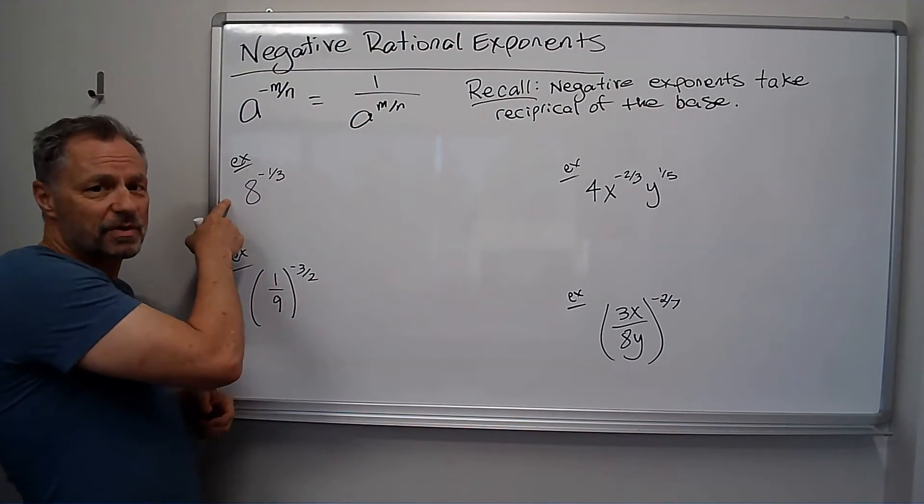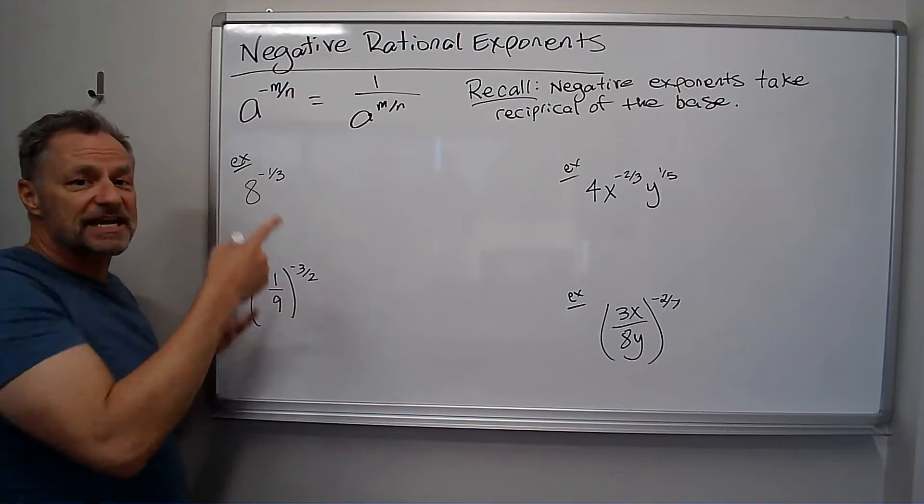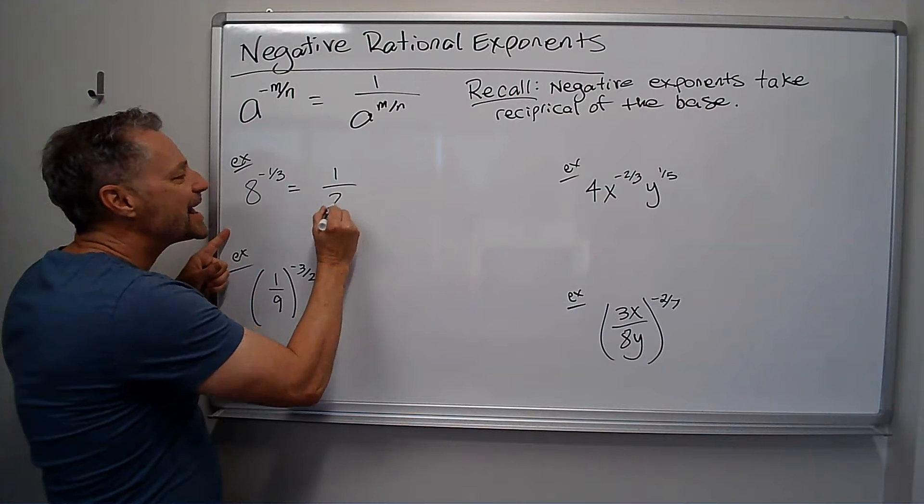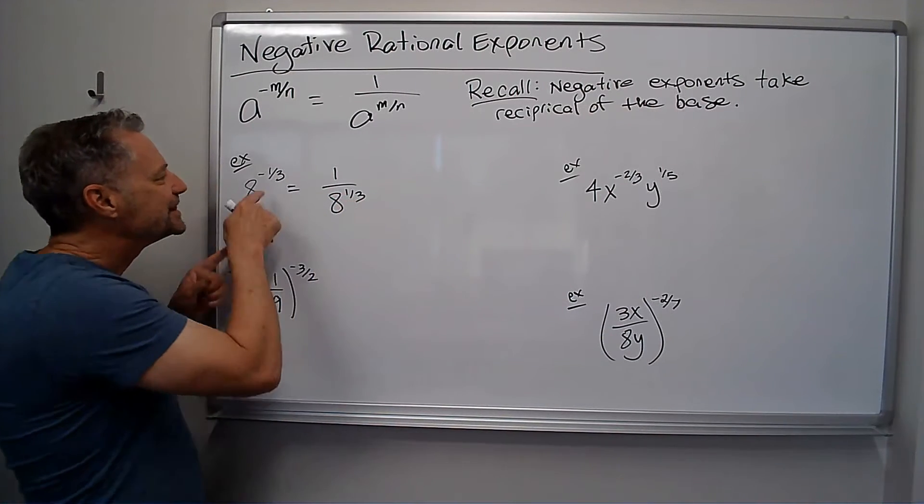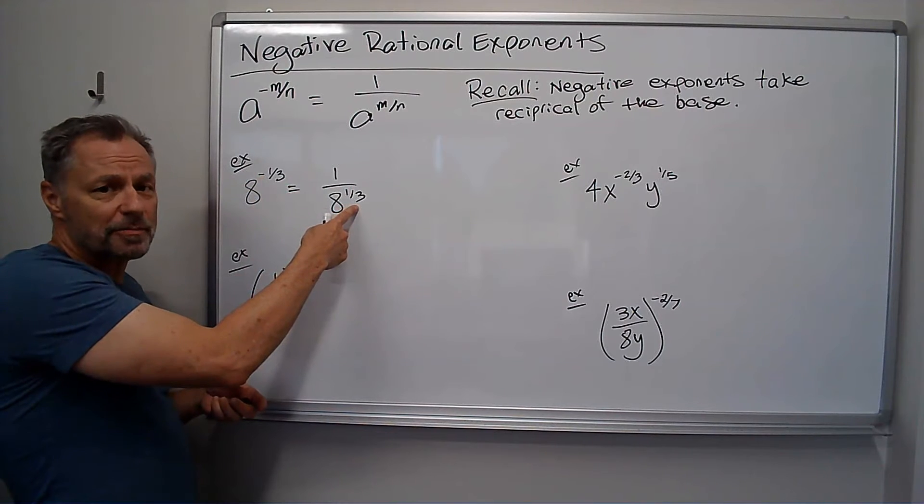So I've got 8 to the negative 1/3. The negative doesn't make this number negative or anything like that, it just takes the reciprocal. So I'm going to do 1 over 8 to the 1/3. The negative's gone, I just took the reciprocal of the 8, put that on the bottom, and now it's to the 1/3 power.